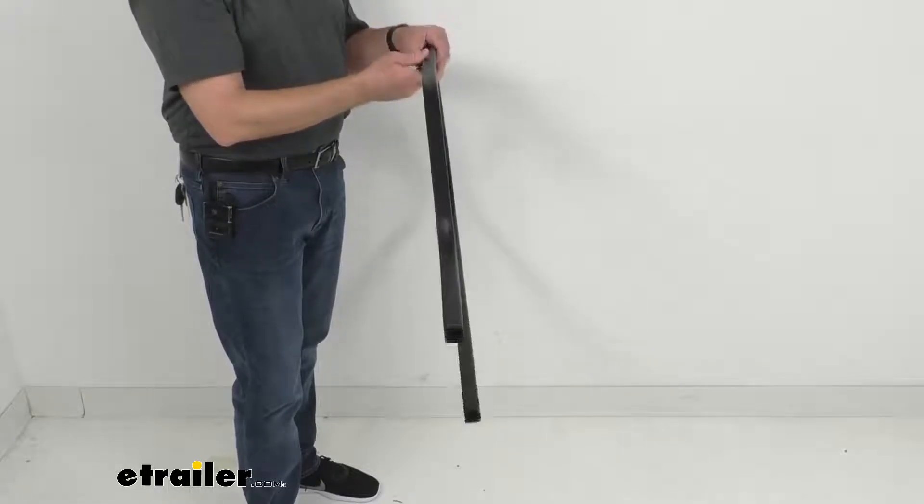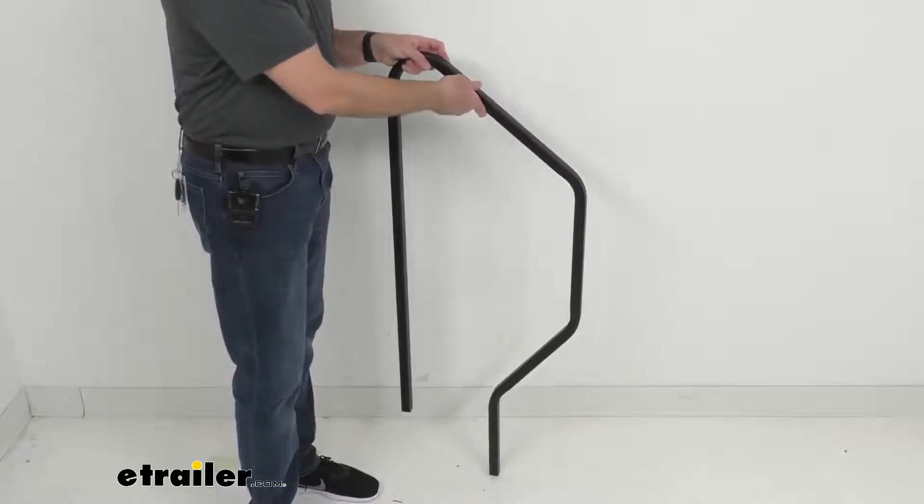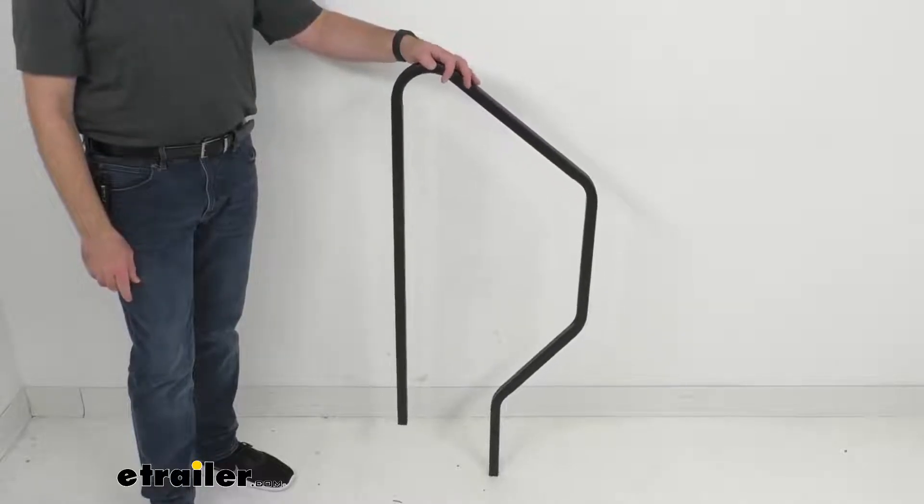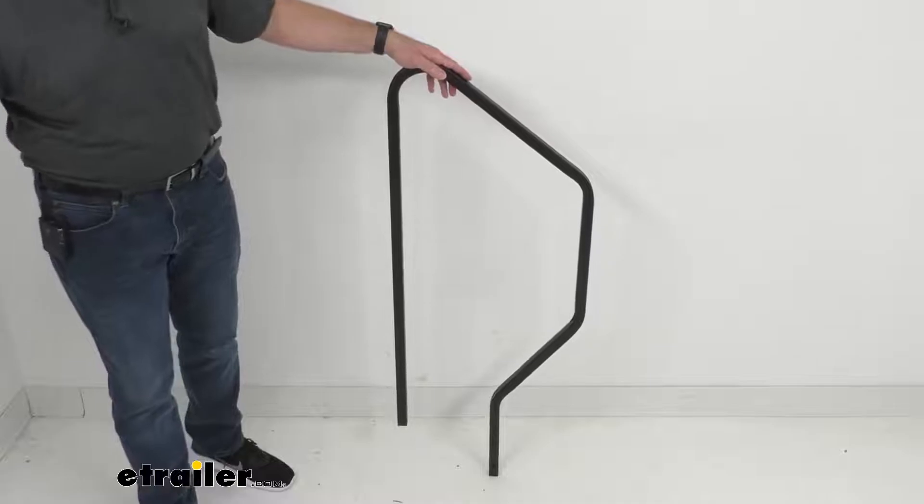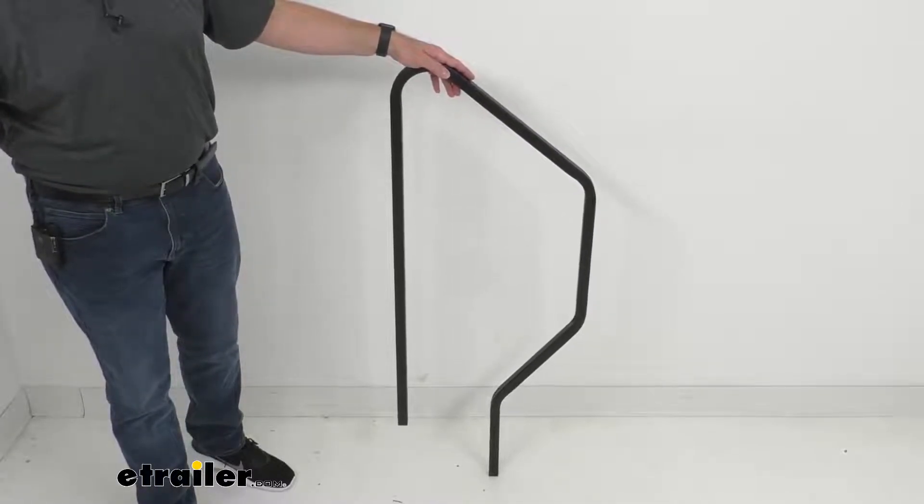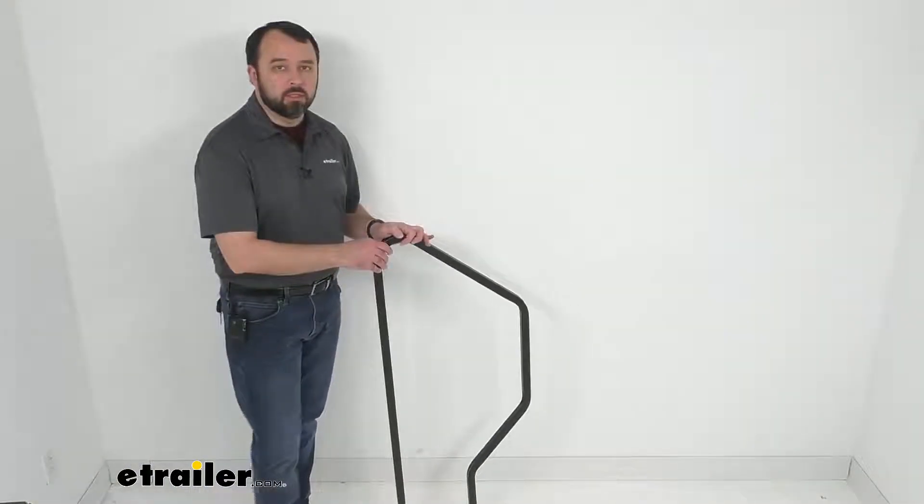Now again, this is for the second generation. If you are looking for a handrail for the first generation four-step MoRide steps, why don't you check out item number MR33RR. That's very similar to this handrail in measurements, but that one is designed for the first generation steps.